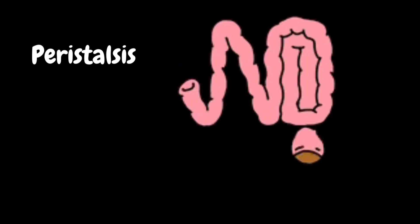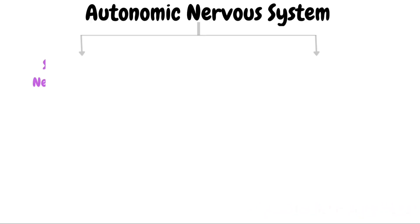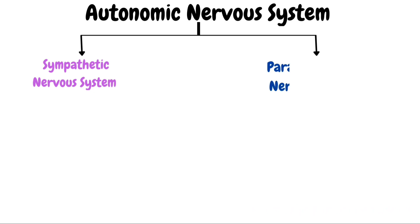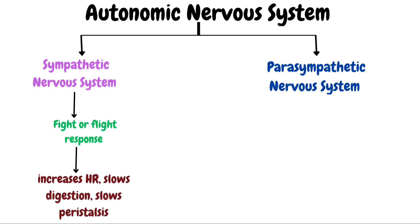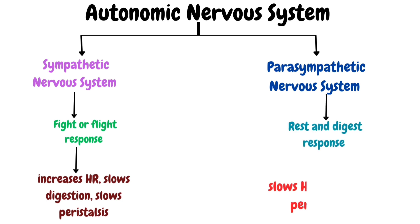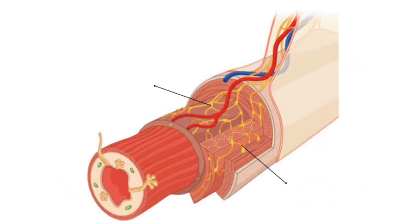Normally the intestines move waste through the bowels in one direction via coordinated wave-like smooth muscle contractions called peristalsis. Peristalsis is controlled by the autonomic nervous system, which is divided into two parts: the sympathetic and the parasympathetic nervous system. The sympathetic nervous system is our fight-or-flight response, which increases heart rate while slowing digestion by reducing peristalsis. The parasympathetic nervous system is the rest-and-digest response, slowing heart rate and increasing digestion by promoting peristalsis.